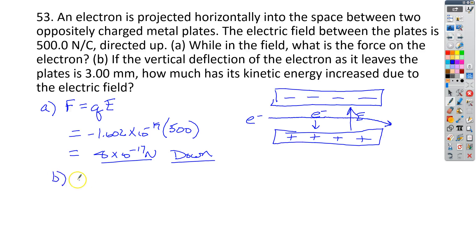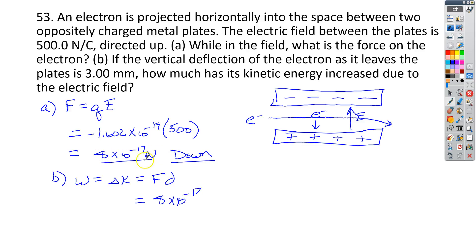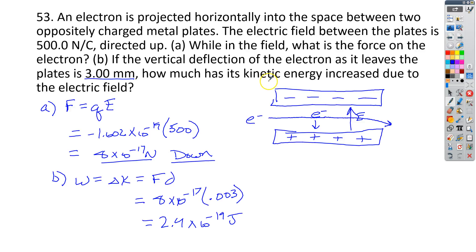For letter B, we know that work equals the change in kinetic energy. So if we find force times distance, we'll know how much kinetic energy is increased due to the electric field. The force is 8 times 10 to the negative 17th newtons. We have a 3 millimeter deflection, which we convert to 0.003 meters. We end up with 2.4 times 10 to the negative 19th joules as the kinetic energy increase, because work equals change in energy.